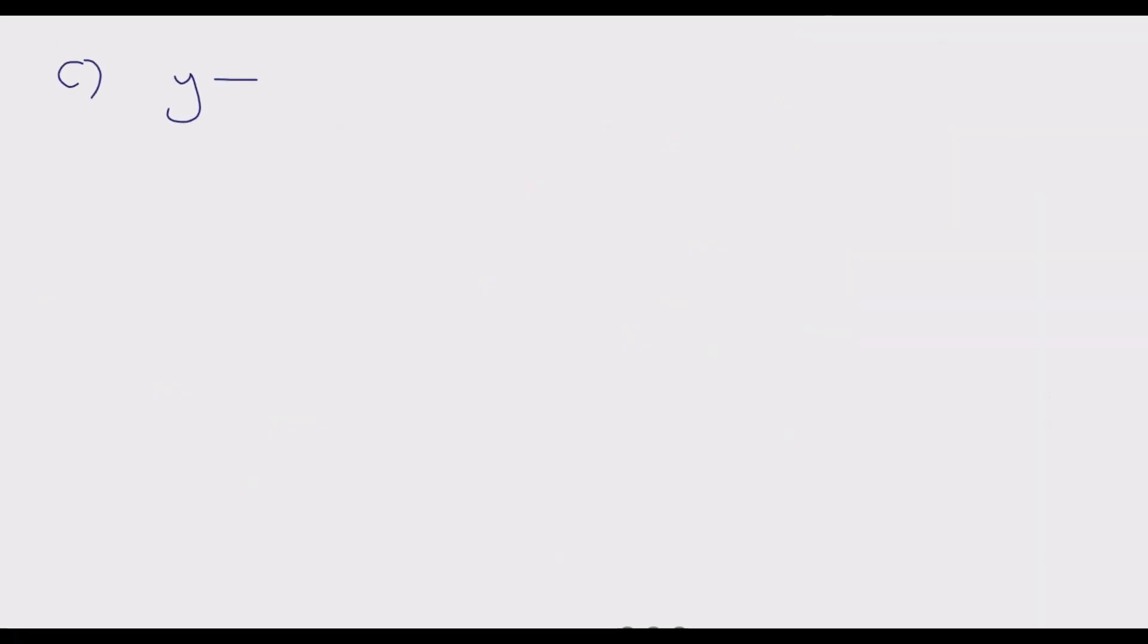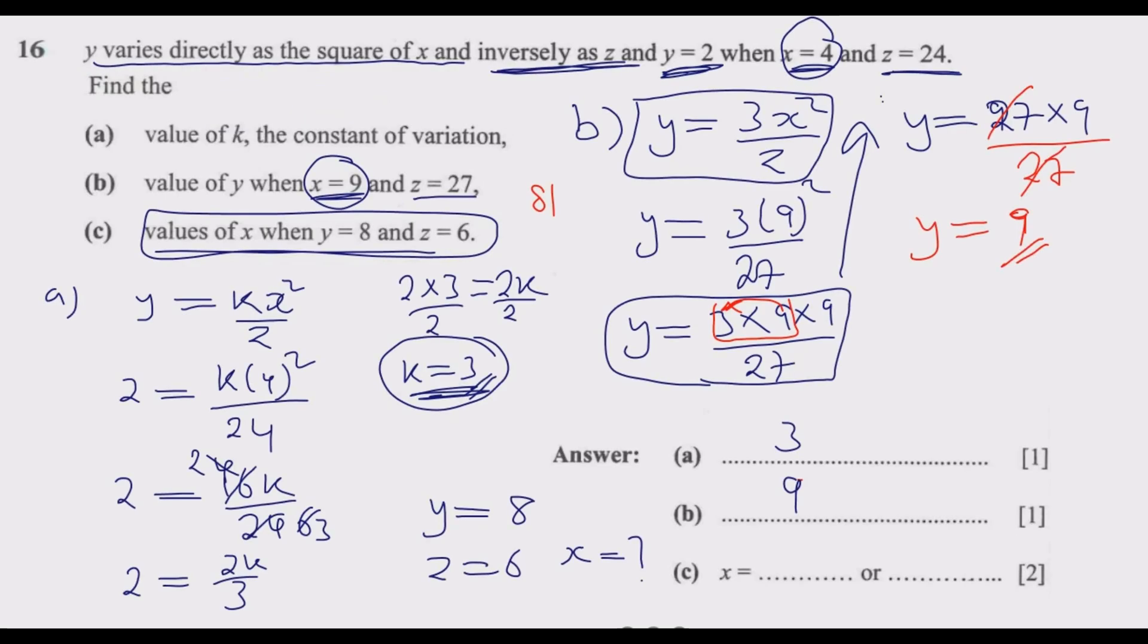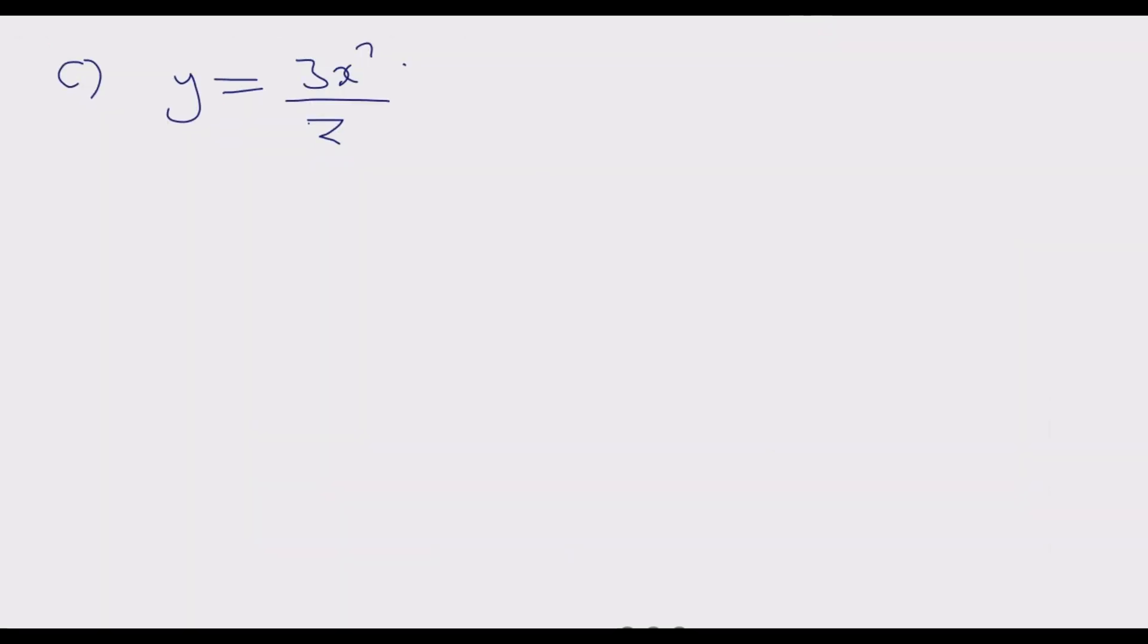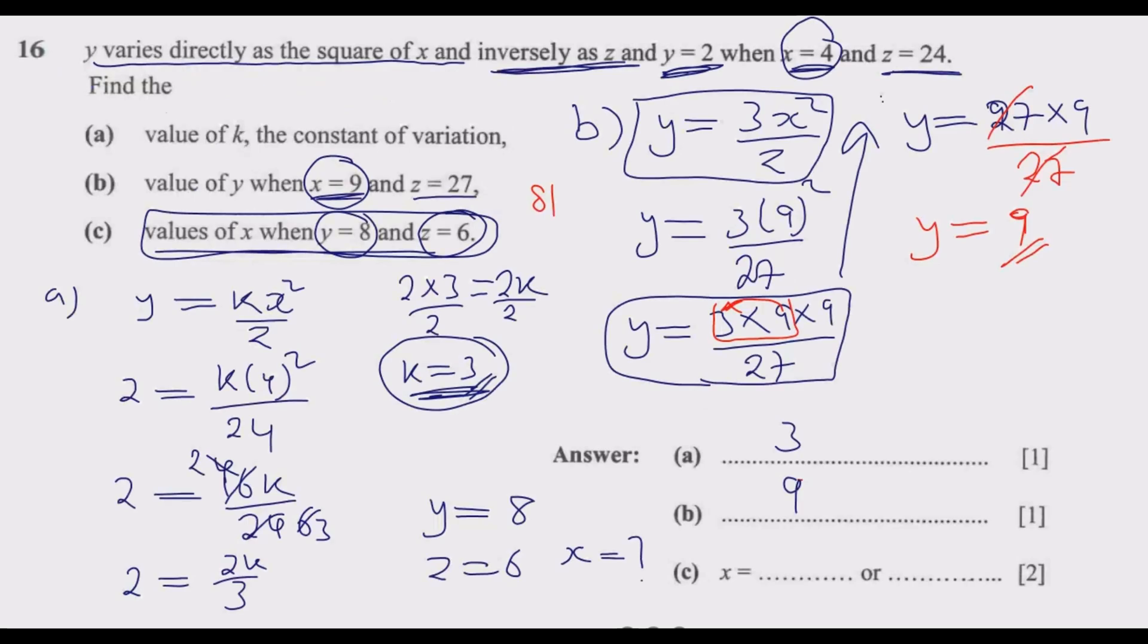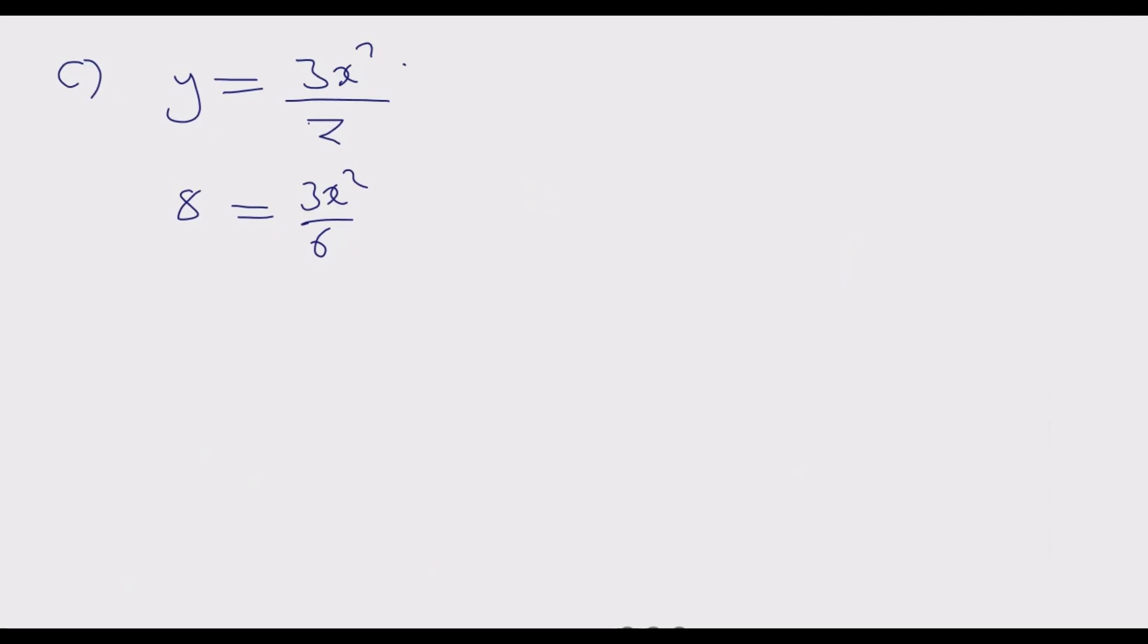So C: Y equals 3X squared over Z. Y is 8, Z is 6. So what we have is 8 equals 3X squared over 6. The question requires us to find the values of X. So what we do now is solve for X. You notice that this is over 1, so cross multiply. This is the next step. We cross multiply here. So it will be 8 multiplied by 6 equals 3X squared.